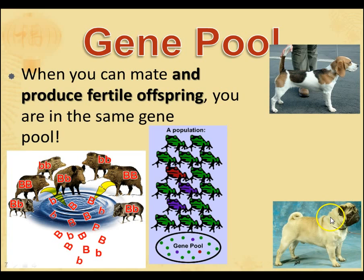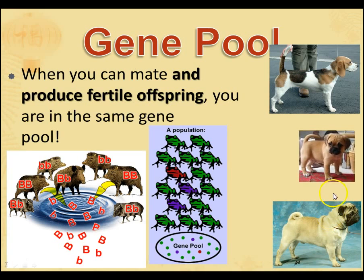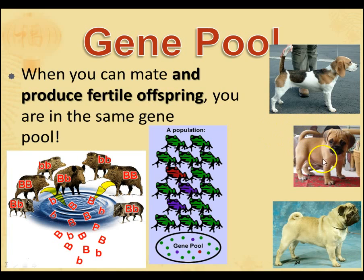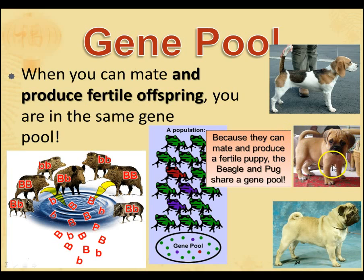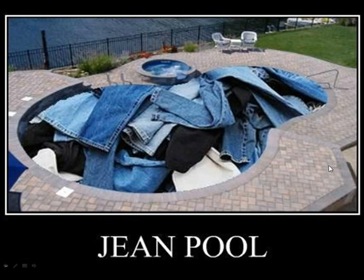This here is the beetle, and this here is the pug, and they can mate and produce fertile offspring called the puggle. So we would say that these are the same species because they share a gene pool. Beetles and pugs can mate and produce offspring — they're in the same gene pool, they're the same species. Yeah, that gene pool.